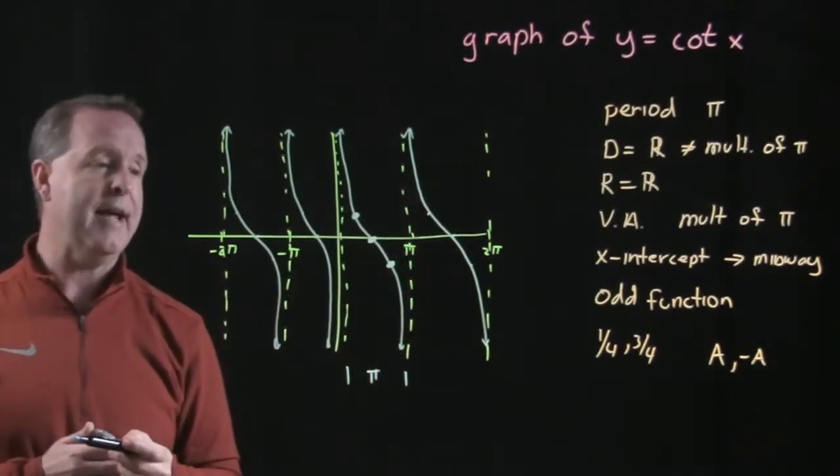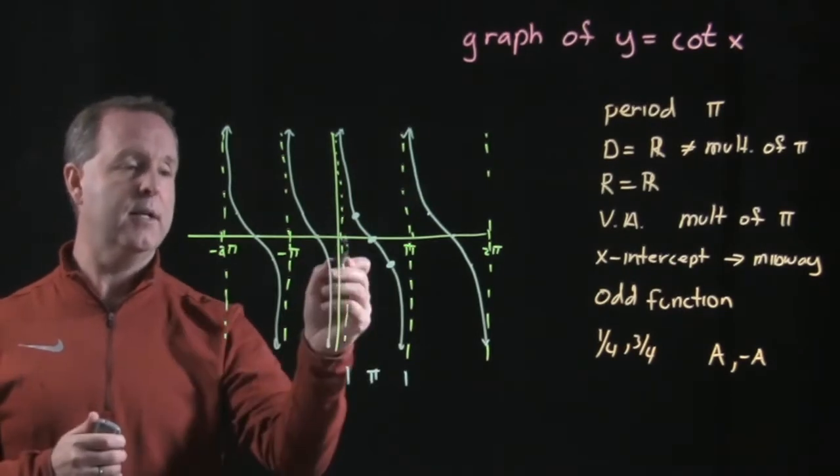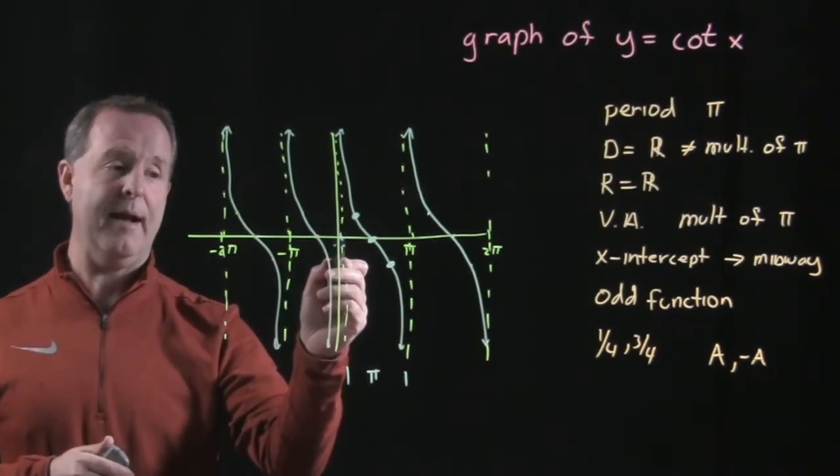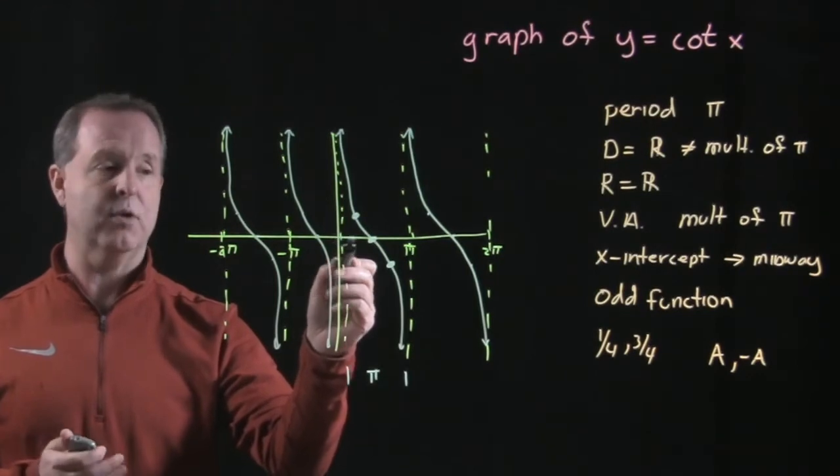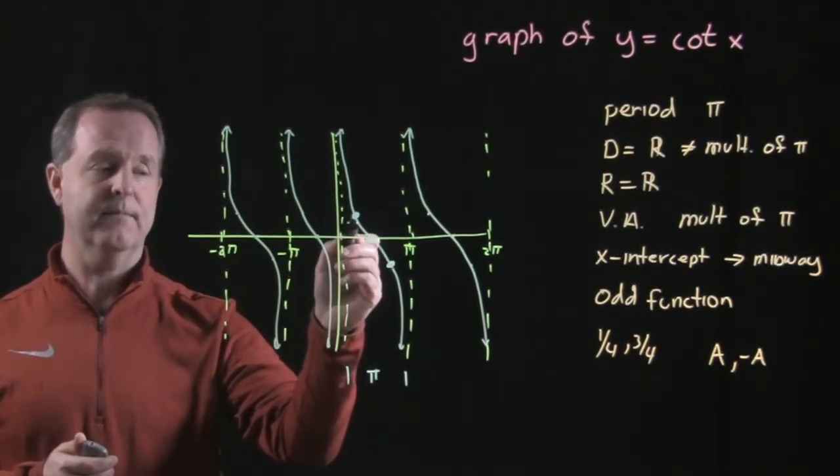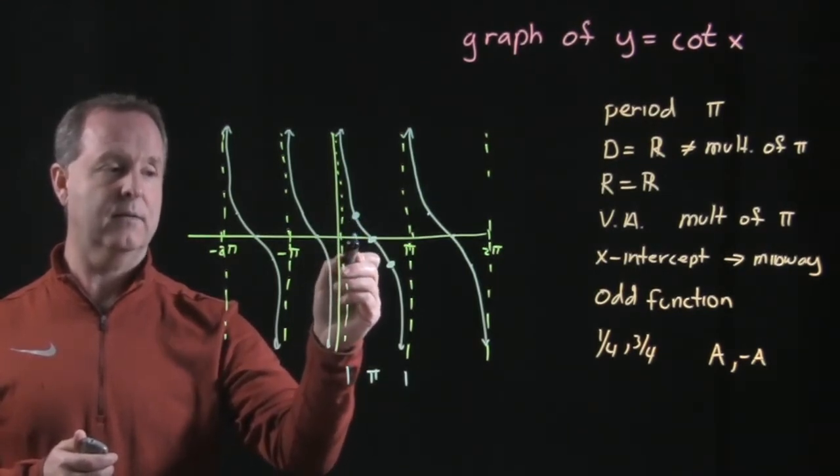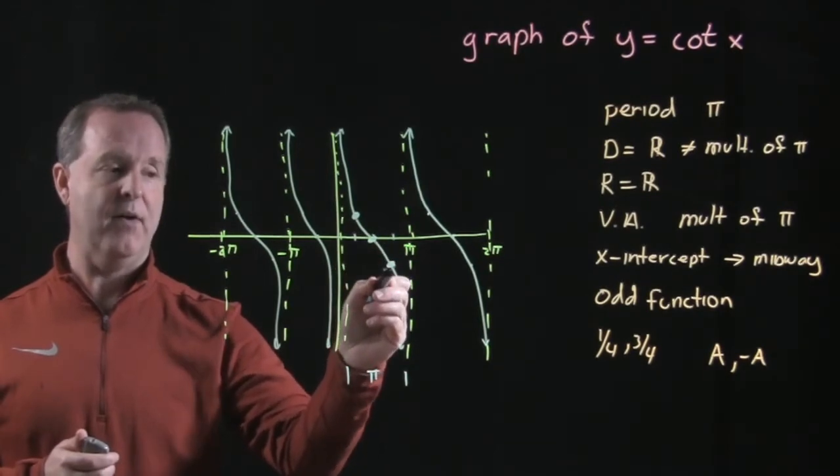So if it was just cotangent of x, the amplitude is one. One-fourth of the way from an asymptote, I have a value of one. Three-fourths of the way, I have a value of negative one.